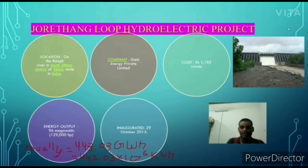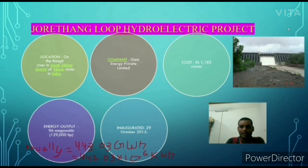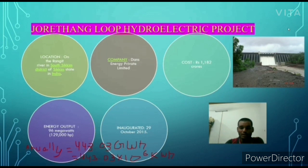The energy output of this project is 96 megawatts or 129,000 horsepower. The total production of this hydroelectric project is 43.03 gigawatt-hours, or 143.03 × 10⁶ kilowatt-hours. The total per capita electricity consumption in Sikkim is 687 kilowatt-hours and the total energy used by Sikkim in the form of electricity is 1,249 gigawatt-hours. This ambitious hydroelectric project was inaugurated on 29 October 2015 by Pavan Chamling, the person with the longest tenure as Chief Minister in India.